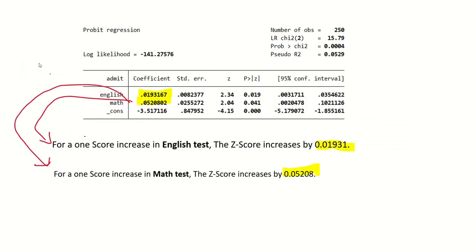Now looking at the coefficients: for one score increase in English test, the z-score increases by 0.01931. We say the z-score increases because the coefficient value is positive. The coefficient value for math is 0.052, so for one score increase in math test, the z-score increases by 0.05208.